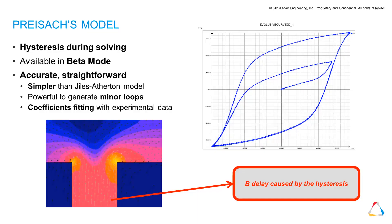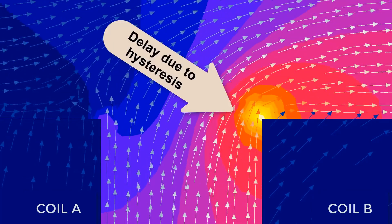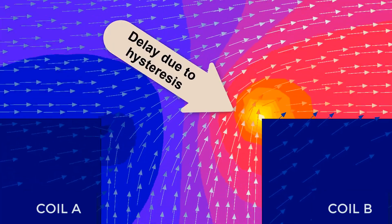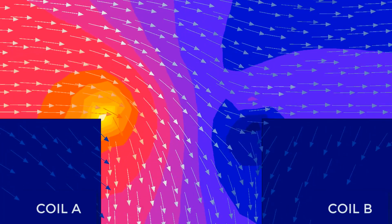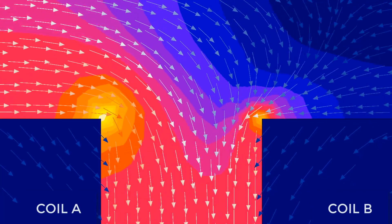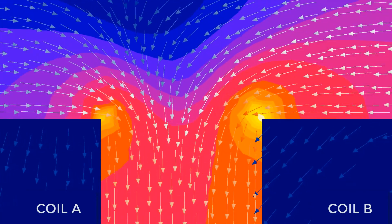In some applications, hysteresis in the BH curve plays a major role. Altair Flux 2019 offers an accurate, straightforward estimation method for hysteresis: the PreSAC model. Here, you can see the effect of the hysteresis in a material excited by two coils.